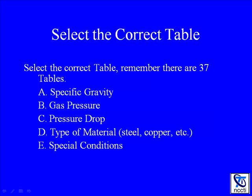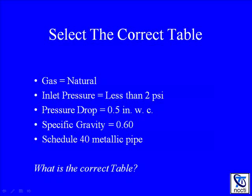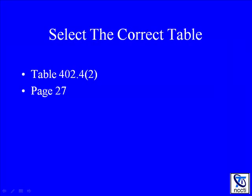When selecting the correct table, just make sure you match up the following: specific gravity, gas pressure, pressure drop, type of material — whether it's steel, copper, CSST — and any special conditions. Our drawing has the following values: gas is natural, inlet pressure less than 2 psi, pressure drop 0.5 inches in water column, specific gravity is 0.6, and we're using schedule 40 metallic pipe. The correct table is table 402.2.2, located on page 27. In this exercise I made it easy — do not expect the board examiners to do the same.